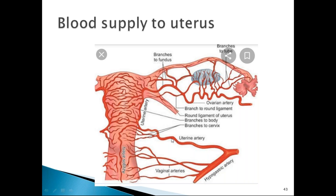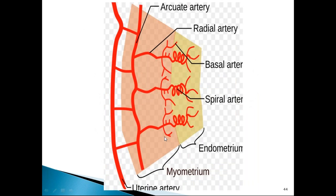The main blood supply of the uterus is from the uterine artery, a branch of the anterior internal iliac or hypogastric artery. The uterine artery travels to the cervicouterine junction along the lateral border of the uterus, gives branches to the myometrium, and anastomoses with the ovarian artery. It also supplies the medial two-thirds of the fallopian tube. After entering the myometrium it forms the arcuate artery, from which radial arteries arise, terminating as the basal artery supplying the basalis layer and the spiral artery supplying the functionalis layer.